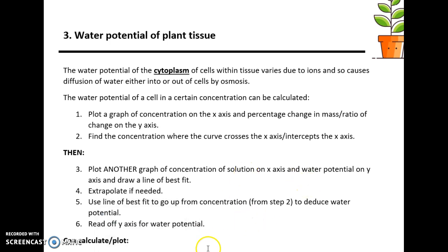Examiners could ask you to explain why the water potential has that value — that's because of the ions and solutes present. They could also ask you to compare two different species of plants: for example, one with a water potential of 10 and one of 20. You'd need to explain why one is higher or lower than the other. The answer is that in the cytoplasm, there are different ions or solutes — more protons or more solutes — that would lower the water potential of that cell's cytoplasm.